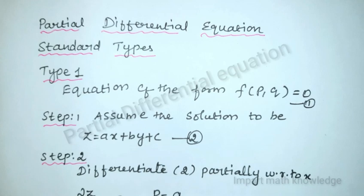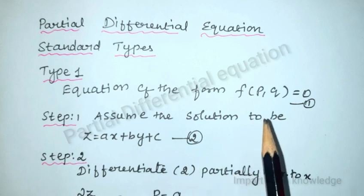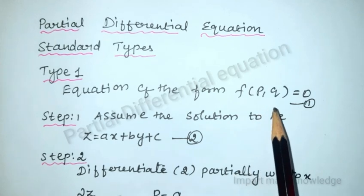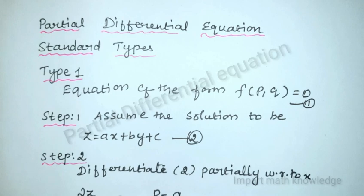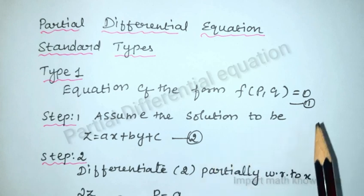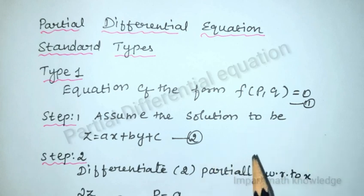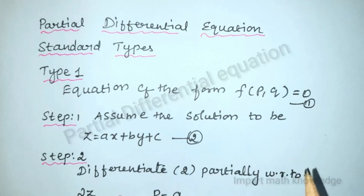The first type is an equation of the form f(p, q) = 0, that is, the equation contains the terms p and q only. For this type we have to find the complete solution.